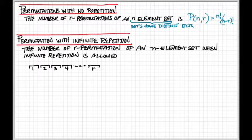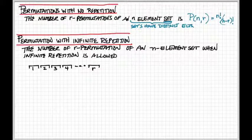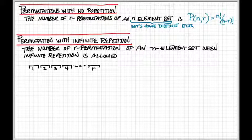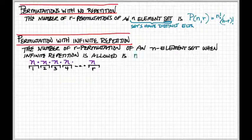If you will have infinite repetition, that's the number of R permutations of an N-element set when infinite repetition is allowed. That means for each one of the positions that you're lining up, so we have R positions, you have N choices for any one of those tasks. So it would be N times N times N, R times, and we would get N to the R.